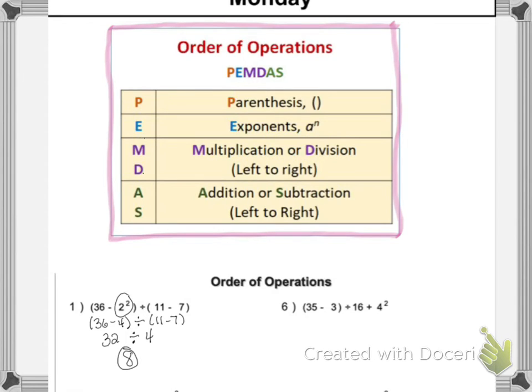All right, so we do have parentheses, so that's the first thing I'm going to do. And I'm going to clear these parentheses by doing 35 minus 3, which gives me 32. Then I have divided by 16, and then I have adding 4 squared.